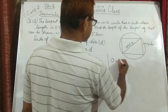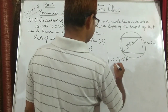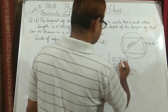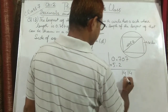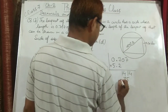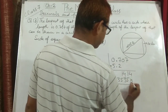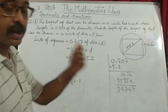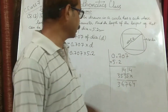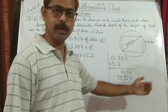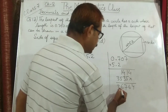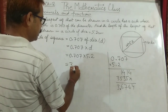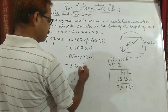So it is 0.707 into 5.2. Multiplying: 7 times 2 is 14, carry 1; 7 times 2 is 14 plus 1 is 15; 5 times 7 is 35; 5 times 7 is 35 — and adding the partial products gives 36764. Now counting decimal places: 0.707 has 3 and 5.2 has 1 — total 4 decimal places. Moving from right to left 4 places, the final value is 3.6764.